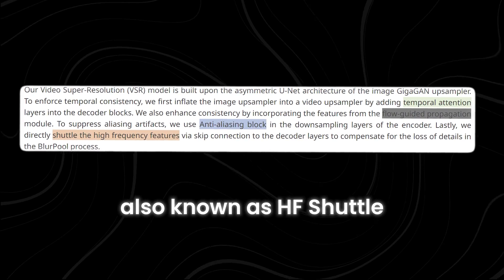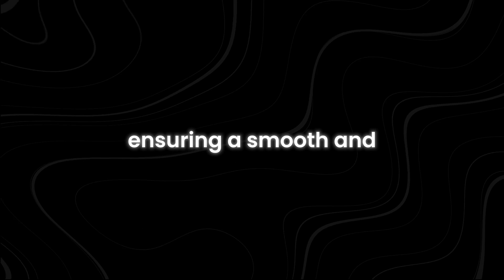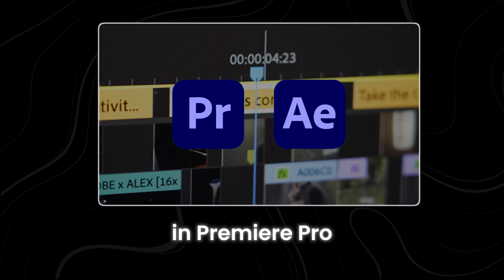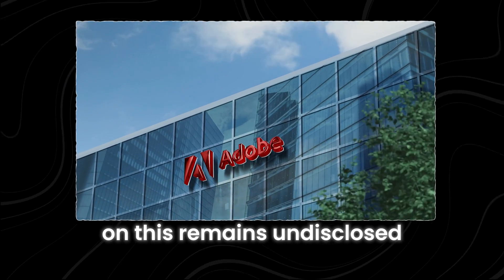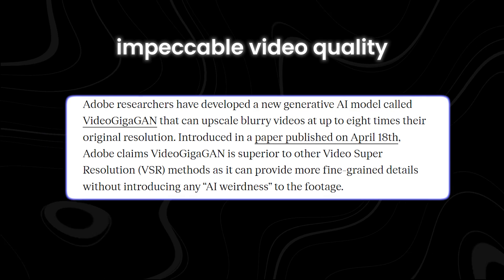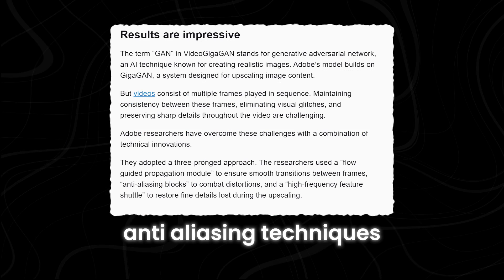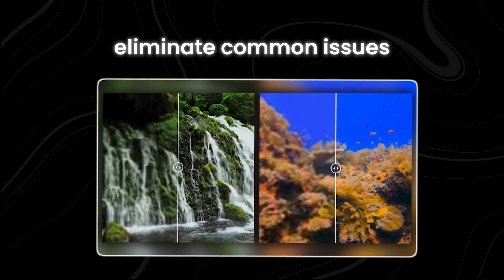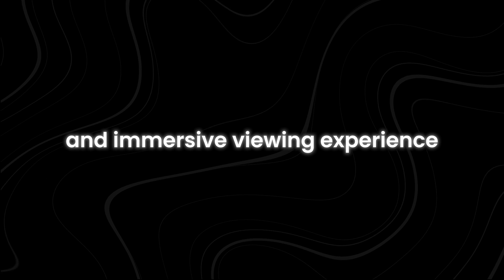Anti-aliasing, also known as HF Shuttle, complements this by efficiently managing high-frequency features, ensuring a smooth and artifact-free viewing experience. While rumors suggest potential integration with After Effects and Premiere Pro for enhancing low-resolution shots, Adobe's official stance on this remains undisclosed, leaving room for speculation and anticipation. In their quest for impeccable video quality, the Video Gigagan team prioritizes mitigating AI weirdness through anti-aliasing techniques and high-frequency feature management. These efforts aim to eliminate common issues such as unnatural coloring and uneven lines, ensuring a seamless and immersive viewing experience.